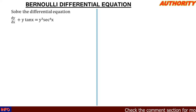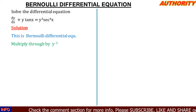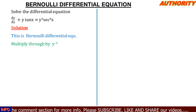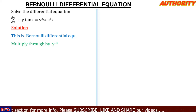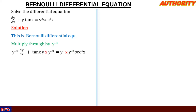To remove this y cubed, we multiply by the inverse of y cubed, which is y raised to power minus 3. When you multiply y cubed by y raised to power minus 3, it disappears. So we multiply everything through by y^(-3), giving us: y^(-3) · dy/dx plus tan(x) · y · y^(-3) equals y^3 · y^(-3) · sec^4(x).